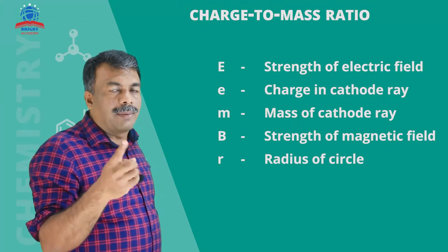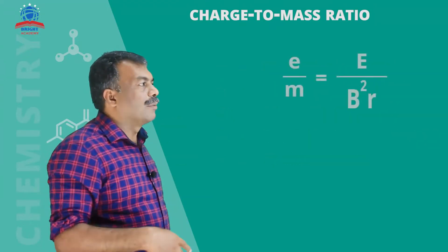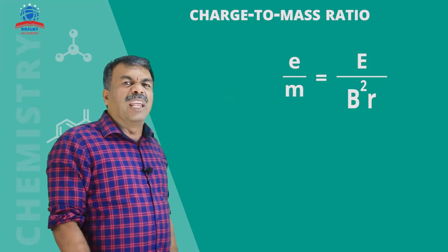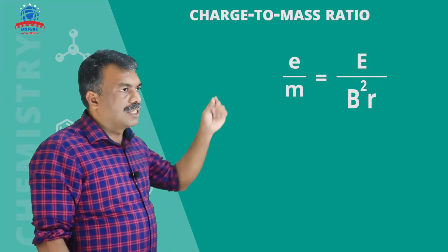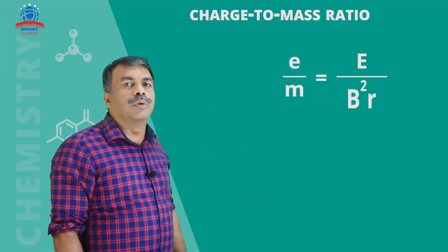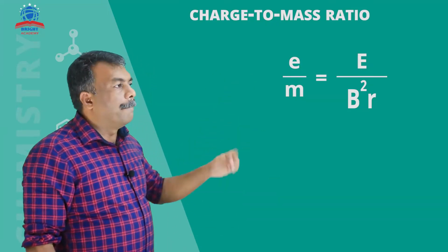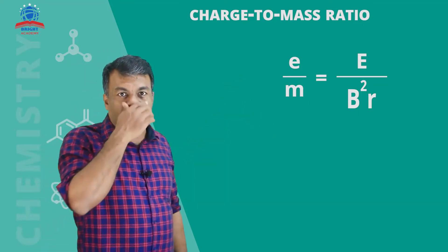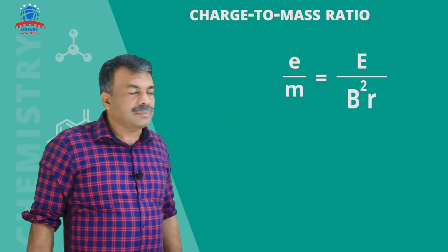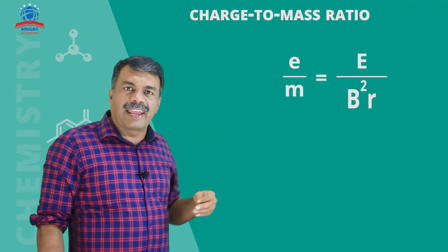From these quantities, using B squared R, we can derive the charge to mass ratio. The formula comes out as e over m equals E divided by B squared R.